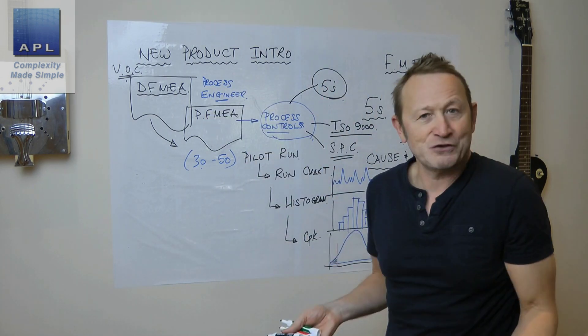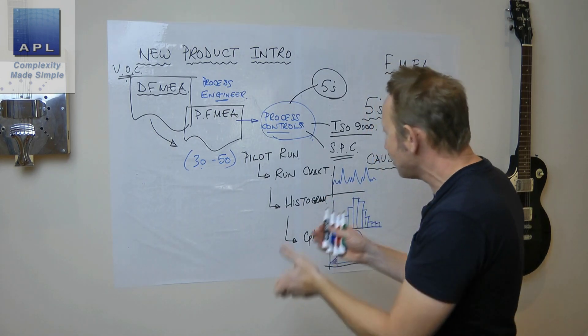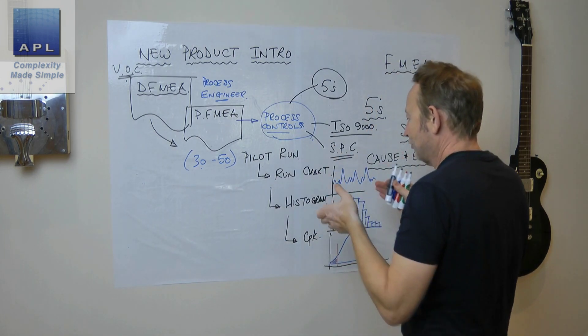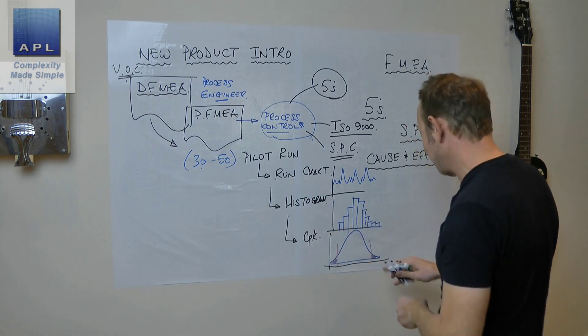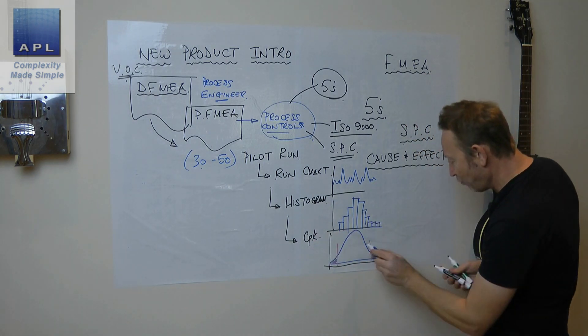You need to test that you've done this well. You're going to go run chart, histogram, CPK. What's your CPK doing? Really important.